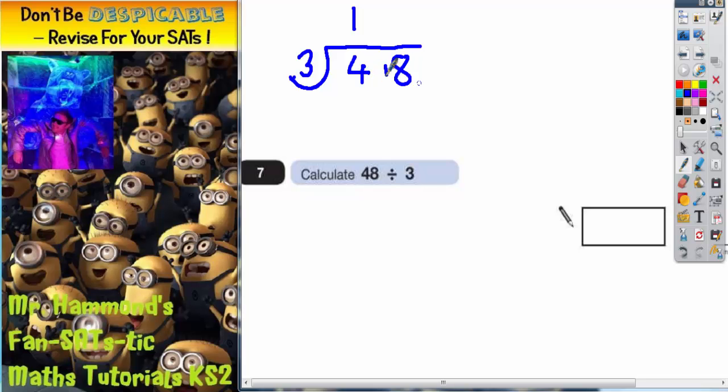And now this 1 makes 18. So how many 3's go into 18? 6 3's are 18, and there's none left over. So the answer is 16.